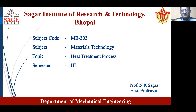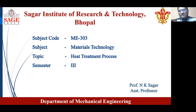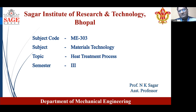Under bulk heat treatment process we have seen four different processes: annealing, normalizing, then martempering and tempering. Under the surface heat treatment process we have seen two categories — one is thermal surface heat treatment process and second is non-thermal heat treatment process. After that we have discussed about the critical temperatures for annealing and normalizing, and also discussed about some heat treatment temperatures with the help of the iron-carbon diagram.